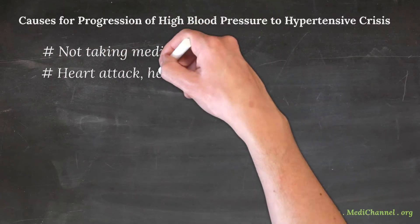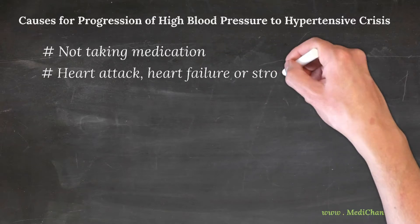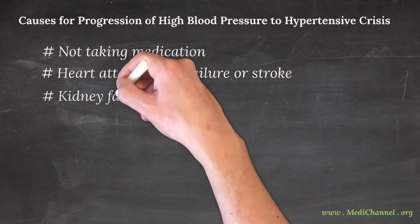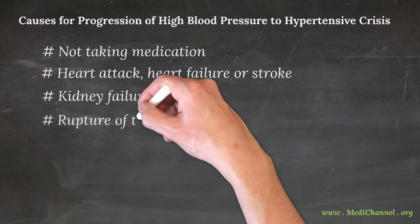kidney failure, rupture in the aorta (the main artery of our body), eclampsia during pregnancy, or drug interactions that cause a sudden spike in blood pressure.